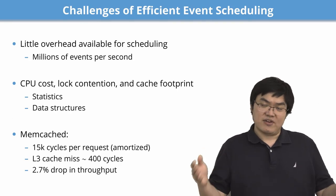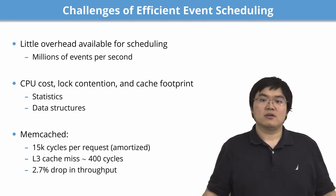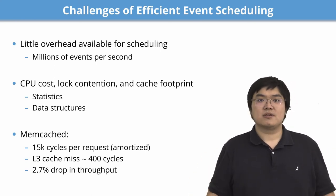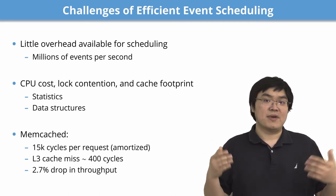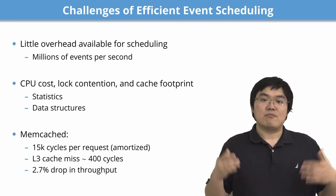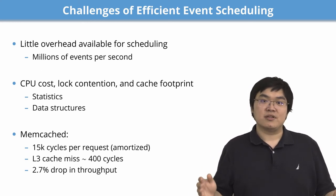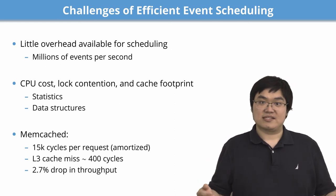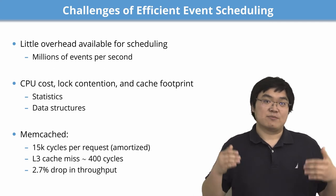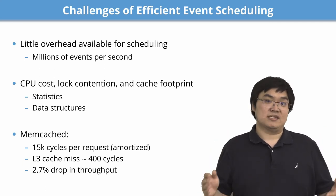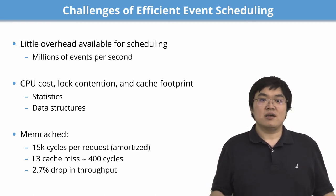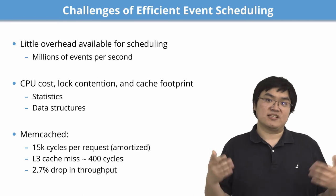Implementing efficient event scheduling in SKQ is hard, as it can service up to millions of events per second to user-space applications, meaning there is little overhead available for making scheduling decisions. We have to carefully trade off CPU cost, memory footprint, and lock contention in both statistics collection and data structure accesses. To put this into perspective, in memcached, it takes about 15,000 cycles to process a single request, and a single L3 cache miss takes about 400 cycles, resulting in a 2.7% drop in memcached's throughput.